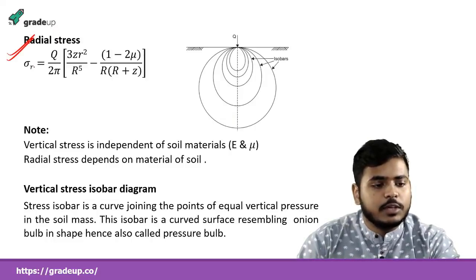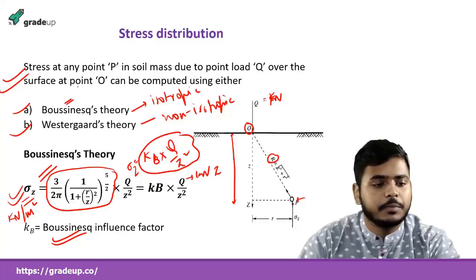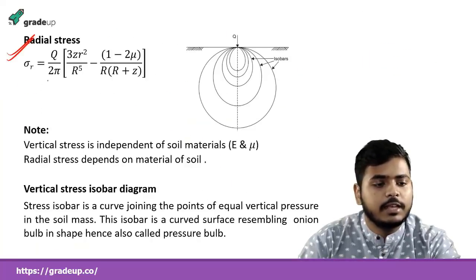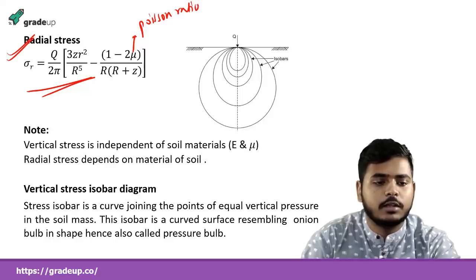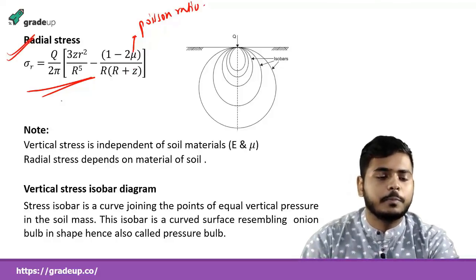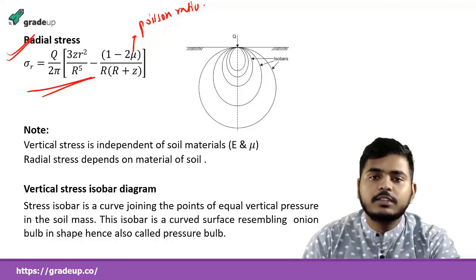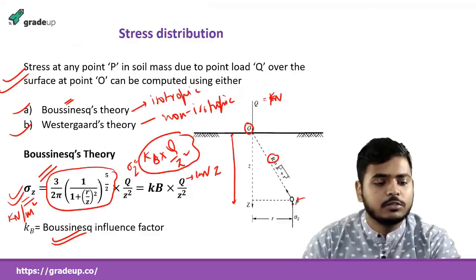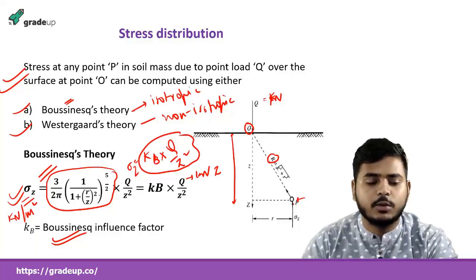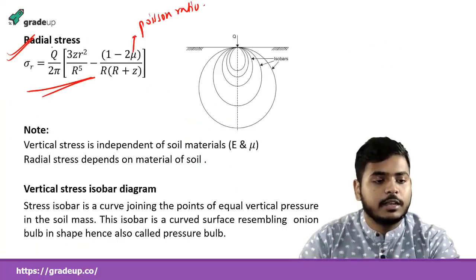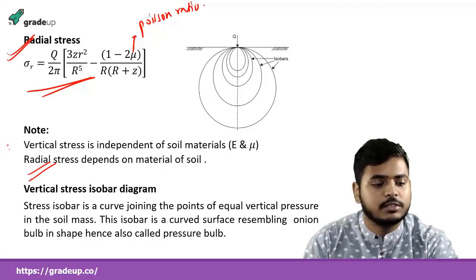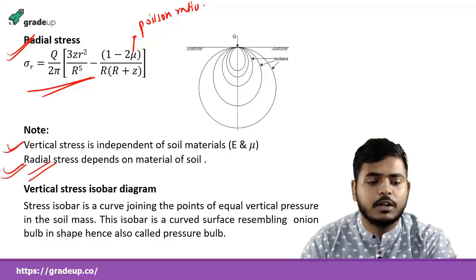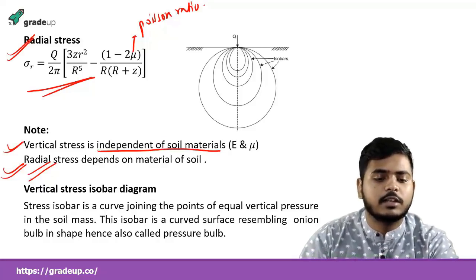The radial stress is given as: σr = (Q/2π) × [3zr²/R⁵ − (1−2μ) × r/(R+z)], where μ is Poisson's ratio of the soil. The key difference is: vertical stress σz is independent of soil material properties (E and μ) — it depends only on the r/z ratio. But radial stress also depends on Poisson's ratio, so it depends on the material of the soil.